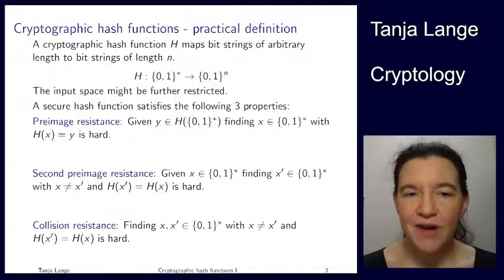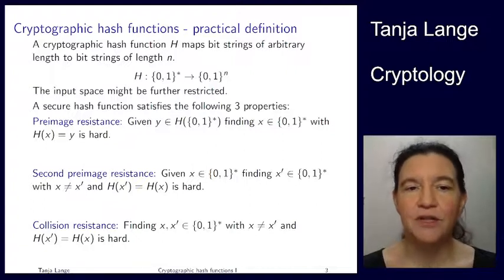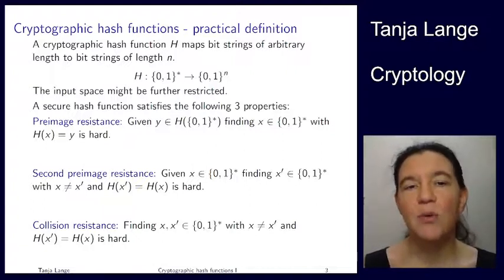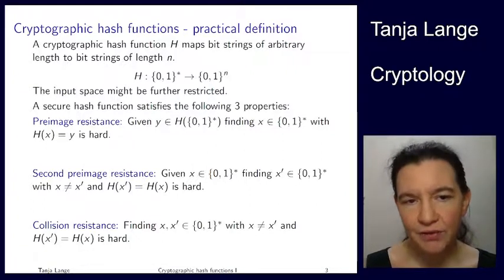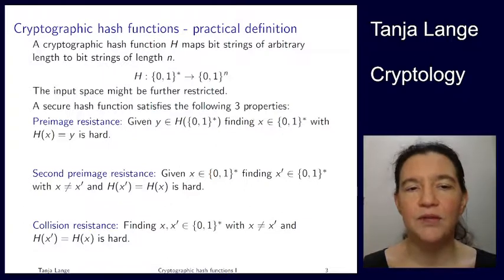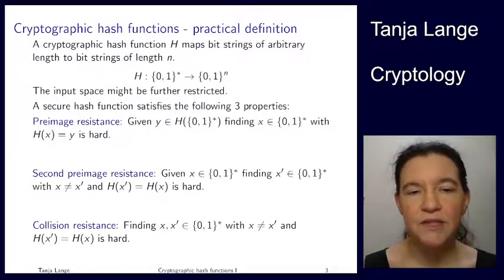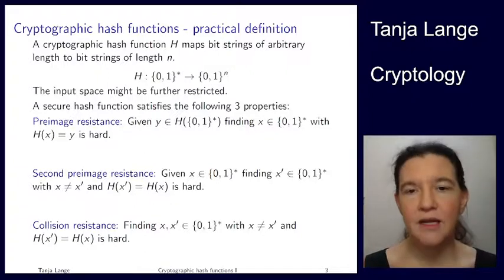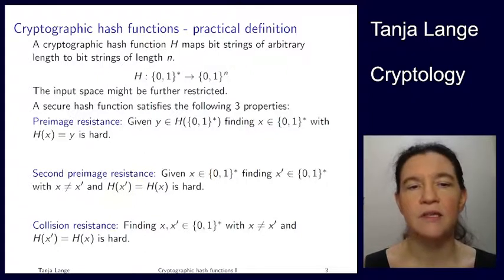Now a cryptographic hash function — or a secure hash function — has the following three requirements. We want it to have pre-image resistance, second pre-image resistance, and collision resistance. I'll briefly go through what these three properties are.